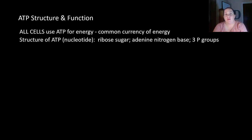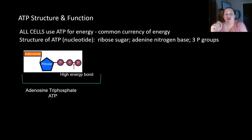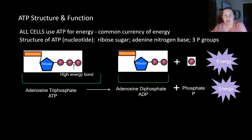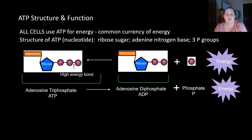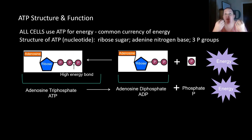Let's briefly discuss ATP structure and function. All cells use ATP for energy — it's our common currency, the most efficient way for cells to operate. ATP is a nucleotide containing a ribose sugar connected to an adenine nitrogen base and three phosphates — hence the name adenosine triphosphate. We can convert ATP into ADP (adenosine diphosphate) plus a phosphate by breaking that last bond, which releases energy that can then be used elsewhere in the cell. This reaction is reversible — ADP and phosphate can be recombined to store energy as ATP.